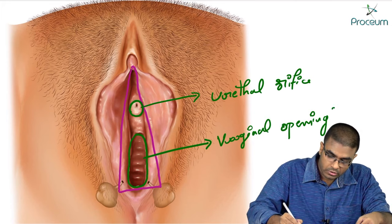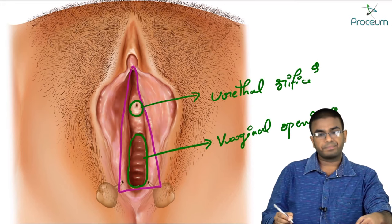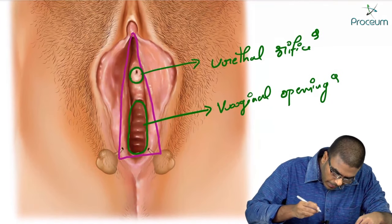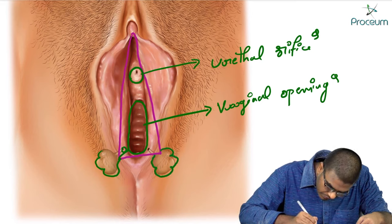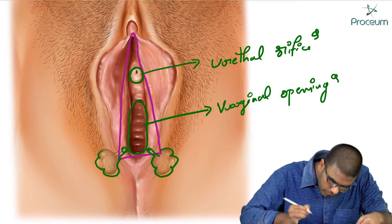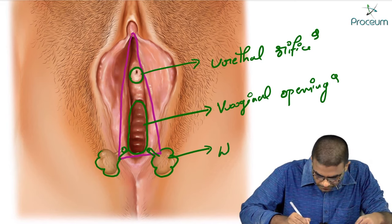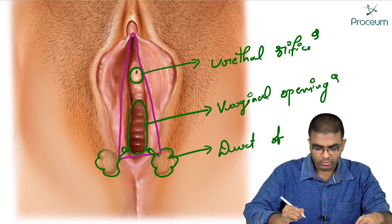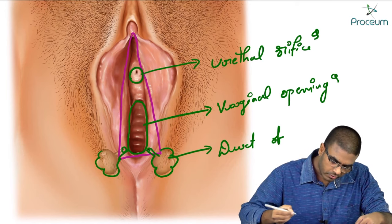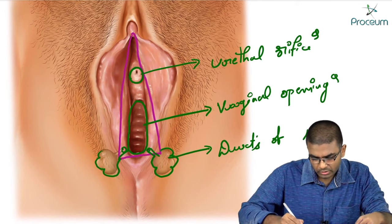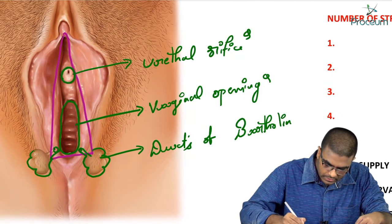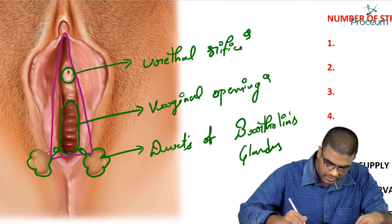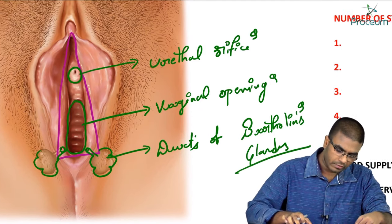Apart from the urethral orifice and vaginal opening, two glands with their ducts are also opening into the vestibule. The ducts of Bartholin's glands are also opening into the vestibule. Additionally, the ducts of Skene's glands are also opening into the vestibule.